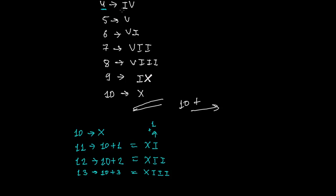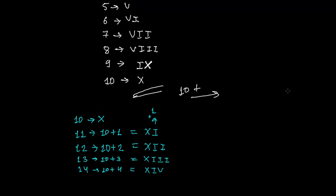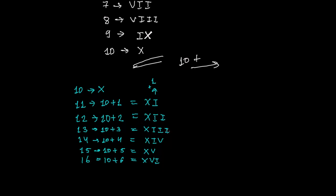For 14, I write 10 plus 4. Since 4 is represented as IV, we get XIV. For 15, it's 10 plus 5, so we write XV. For 16, it's 10 plus 6 — and 6 is XVI, where X is 10, V is 5, and I is 1. So XVI represents 16.